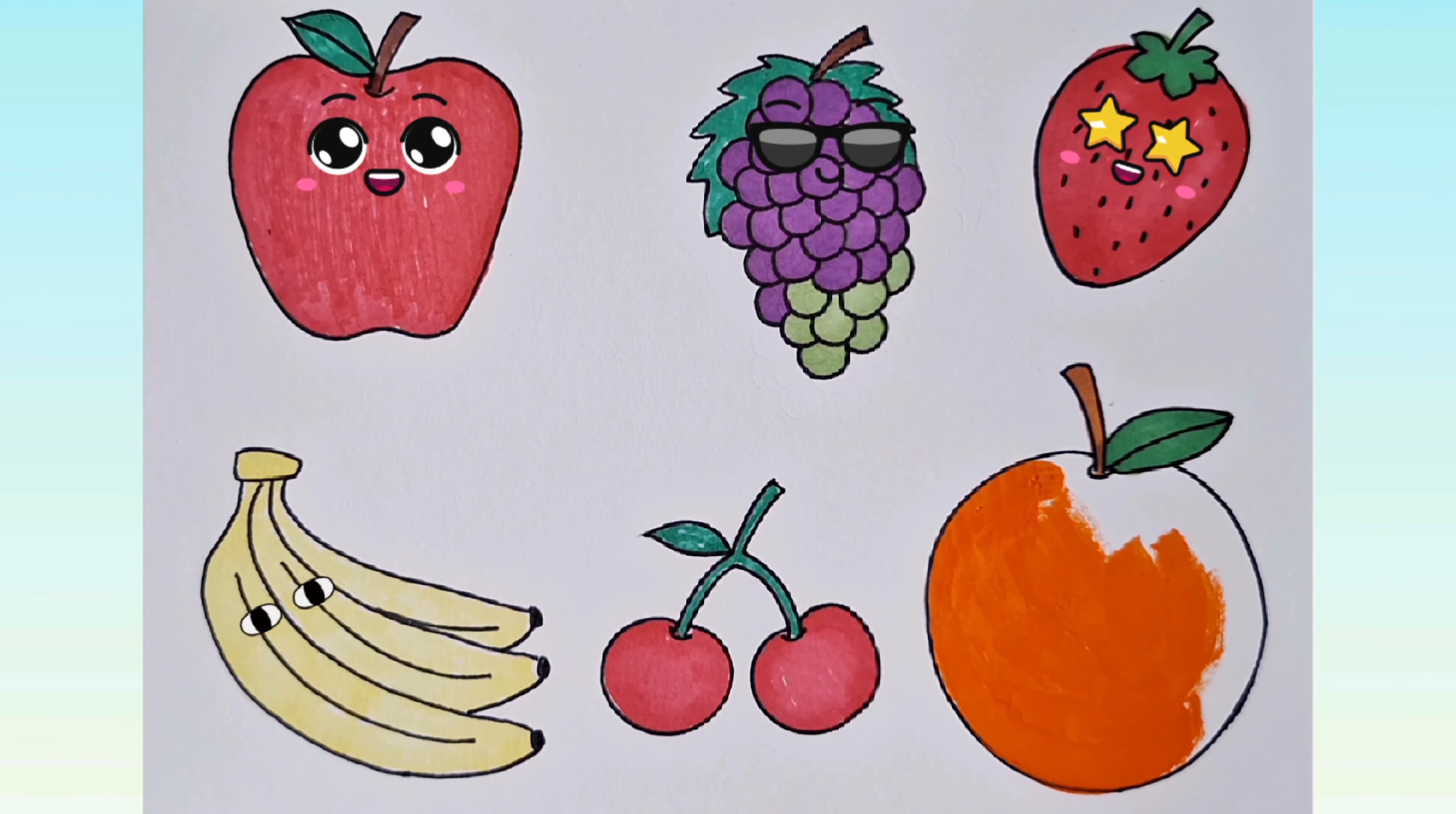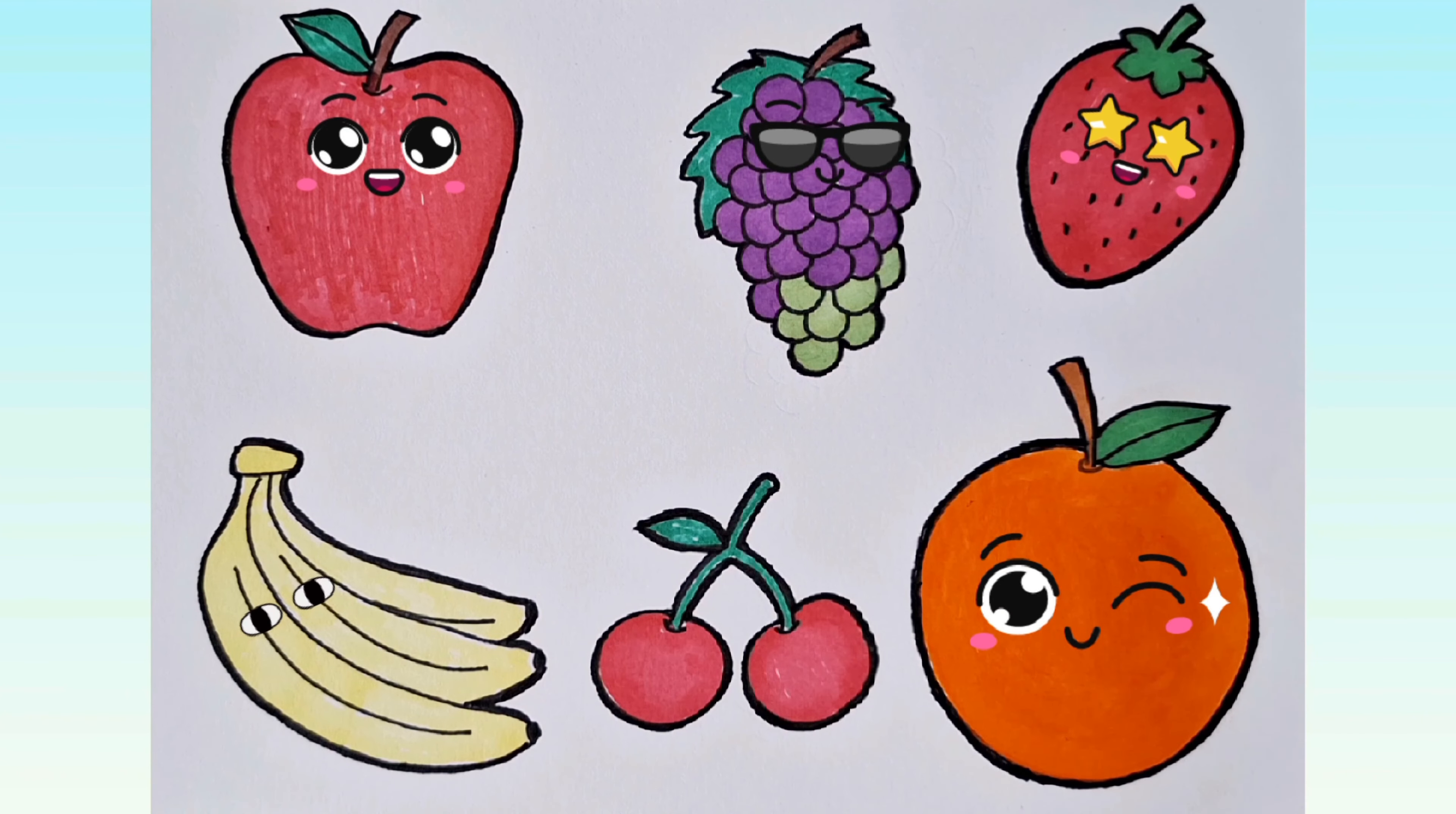A, B, C, D, E, F, G, H, I, J, K, L, M, N, O, P, Q, R, S, T, U, V, W, X, Y, Z. Now I know my ABCs. Next time won't you sing with me? ABC.